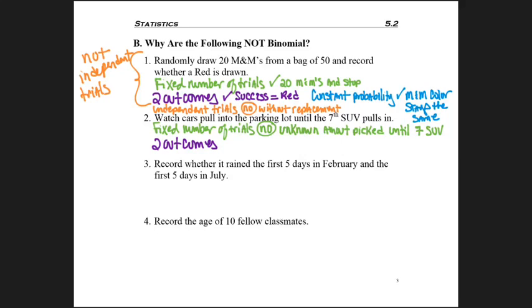What about two outcomes? Did we have that here? Yeah. Success is a car is an SUV. Failure is it's any other type of car.